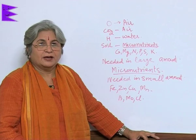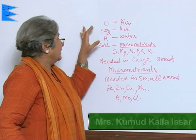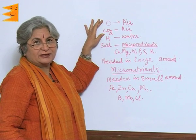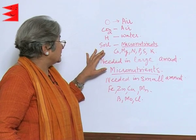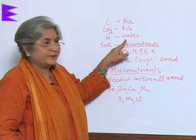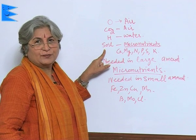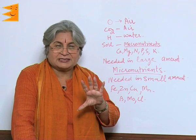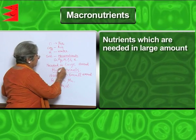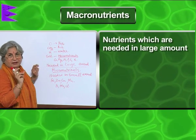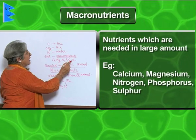Plants get nutrients from multiple sources. Oxygen and carbon dioxide come from air, needed for respiration and photosynthesis. Hydrogen comes from water. The rest of the nutrients come from soil, which provides not only water but also nutrients dissolved in it. Nutrients can be classified by requirement: macronutrients are needed in large amounts and include calcium, magnesium, nitrogen, phosphorus, sulfur, and potassium.